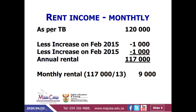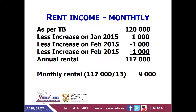We're going to take the amount as per the nominal balance — that's 120,000 — and reduce it by the increment so we can arrive at an annual rental that we can divide by 13 to determine the monthly amount. We're going to take the balance and deduct three thousand, which represents the increment: one thousand in January 2015, one thousand in February 2015, and one thousand in March 2015. That gives us an amount of one hundred and seventeen thousand.